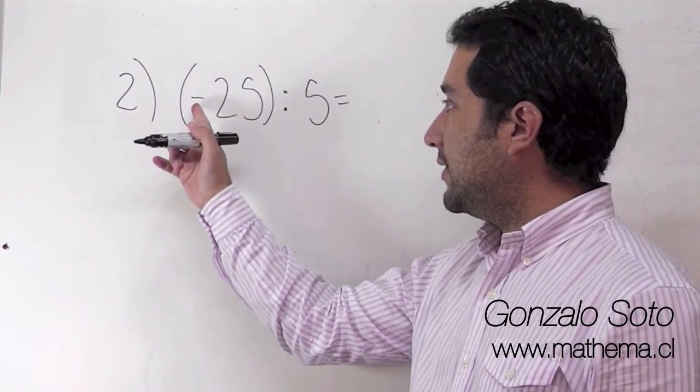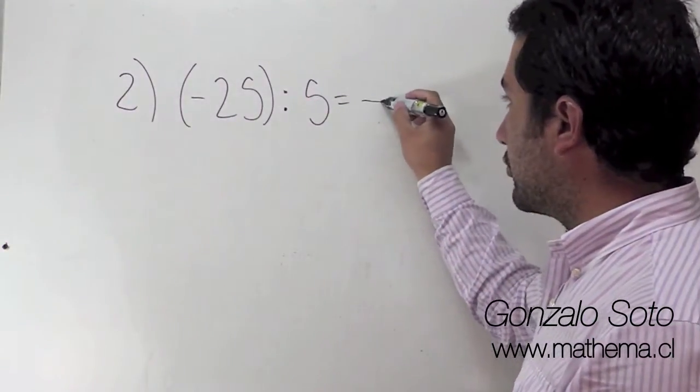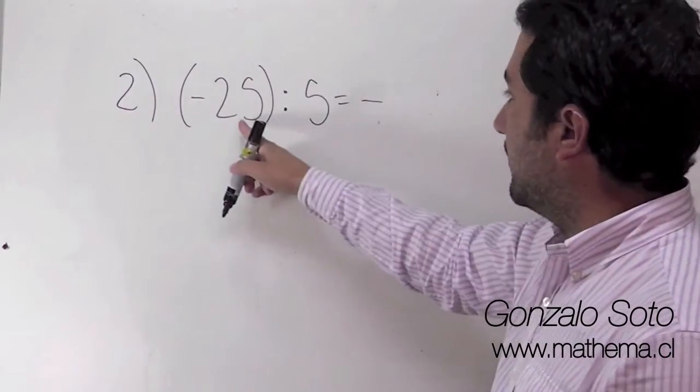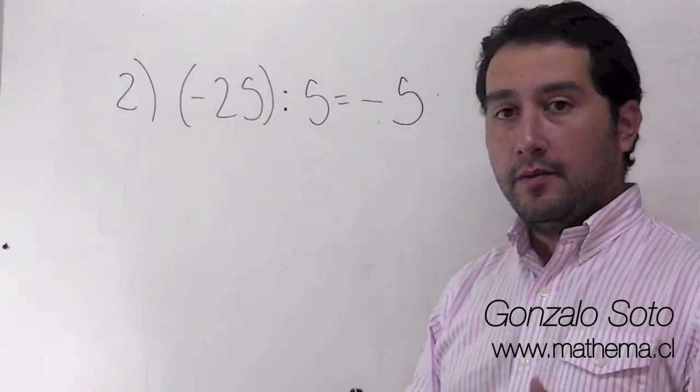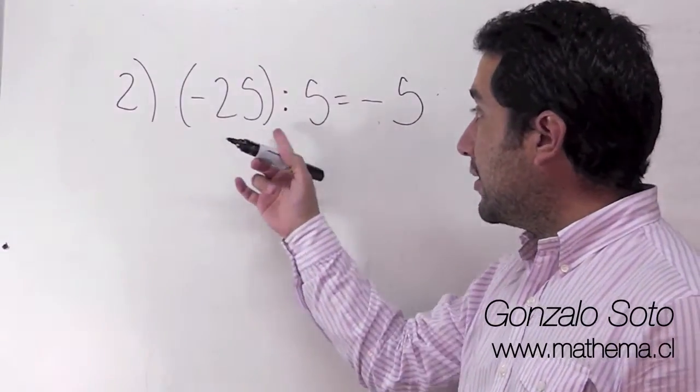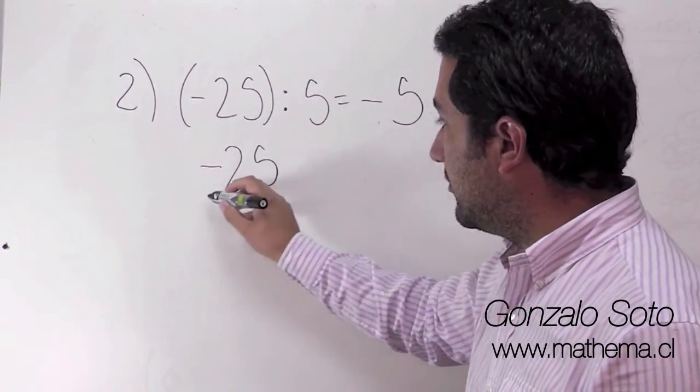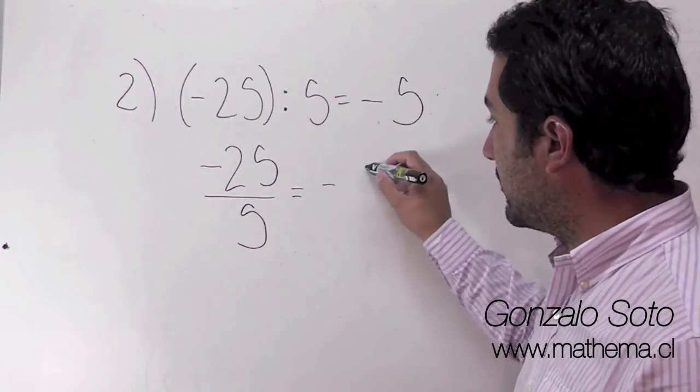Según la regla de los signos, menos dividido en más es menos. Y dividimos las cantidades. 25 dividido en 5 es 5. Volvemos a reiterar que esto también se puede escribir de la siguiente manera: 25 dividido en 5, que nos da el mismo resultado.